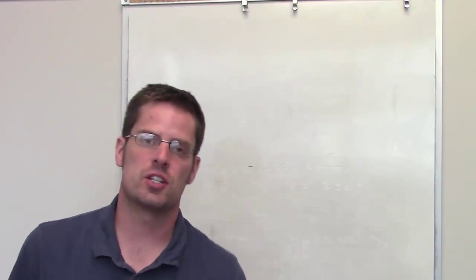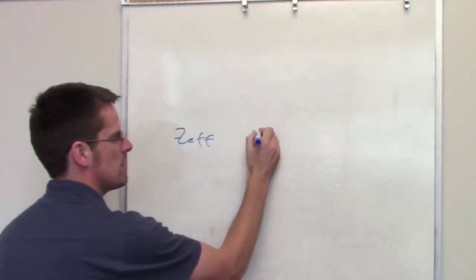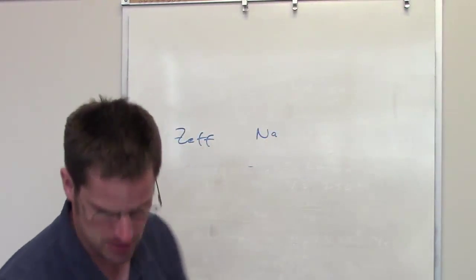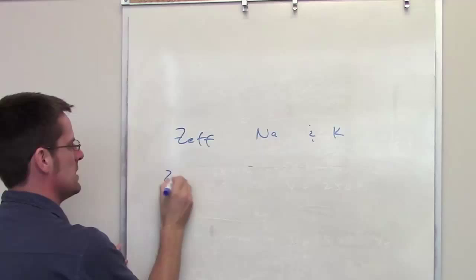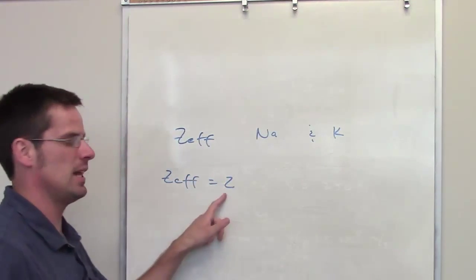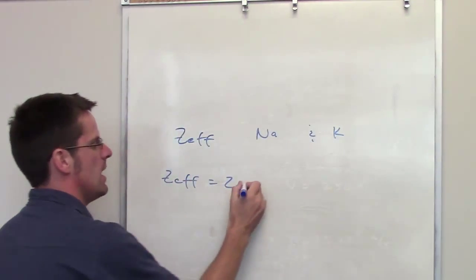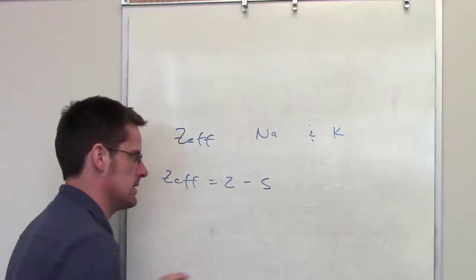This first question asks us to determine the Z-effective for two different elements, one of them is sodium and the other is potassium. We have to remember that Z-effective is equal to Z, which is the number of protons in the nucleus, minus S, which is the screening constant.